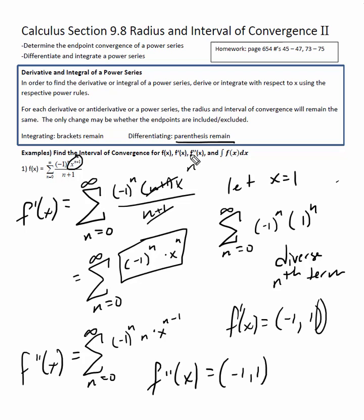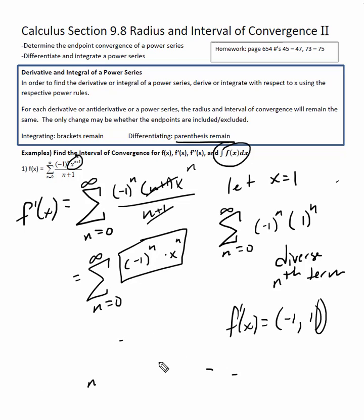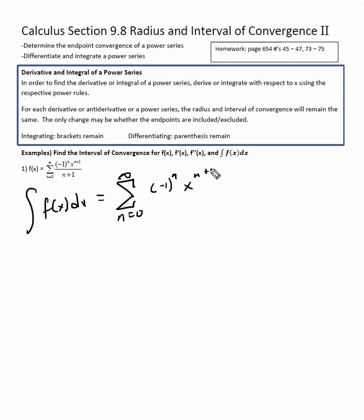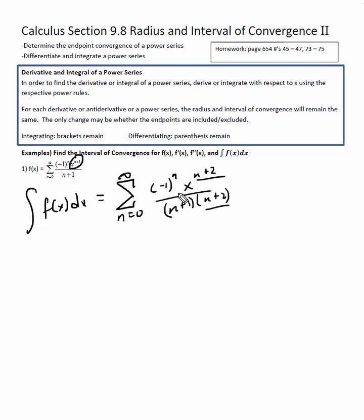Now we have to find the integral of f of x dx. That's equal to the summation from n equals zero to infinity of negative one to the n, x to the n plus two, over n plus one times n plus two. When integrating the x piece, I'm adding one to the power — giving n plus two — and dividing by that same power. Everything that's not in x is just a constant.